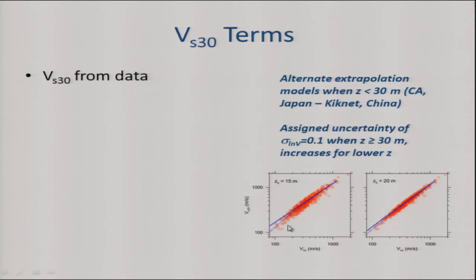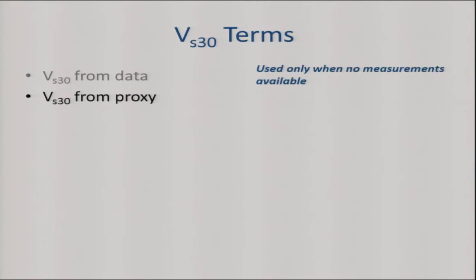VS30 from proxy is used only when we don't have measurements. We do populate the database even when we have measurements, for the purpose of evaluating the proxies. But in the end, the value passed on to Tim is based on measurements when we have them. If we don't have measurements, we use the proxies. We then analyzed the proxies using collected data and other data to look at how accurately they predict VS30.